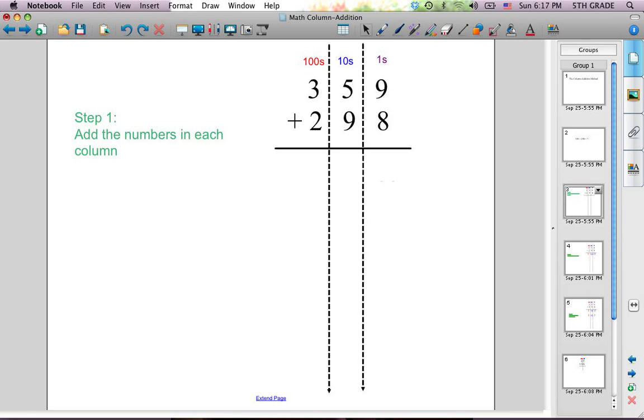To start with the column addition method, we need to set up some columns. You'll notice that we have the ones column, the tens column, and the hundreds column, and there's one digit in each column.